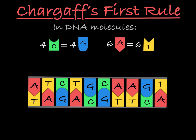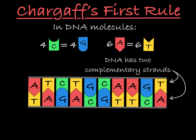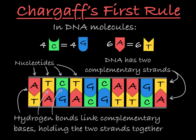This phenomenon can be explained by the complementary base pairing that gives DNA its double-stranded structure. Each strand of DNA is made up of nucleotides, and the two strands are connected together by hydrogen bonds linking the bases of complementary nucleotides. Guanine is complementary to cytosine, and adenine is complementary to thymine.